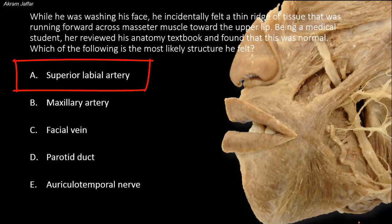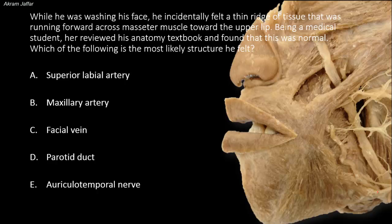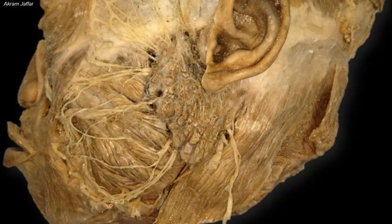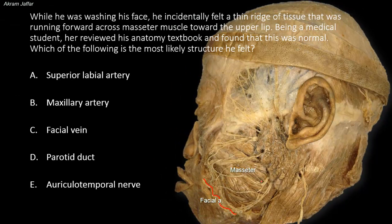The superior labial artery is a branch of the facial artery. The facial artery enters the face around the inferior border of the mandible, located just anterior to the masseter muscle. Here you can see the facial artery in front of the masseter muscle, and this is the position where the pulsations of the artery can be felt.